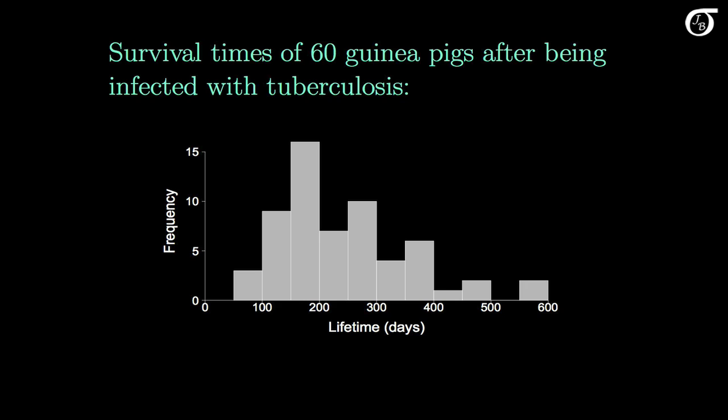In addition to plots, we often report a numerical measure of central tendency. For instance, we might report the average survival time or the median survival time. So let's take a look at some of those measures.